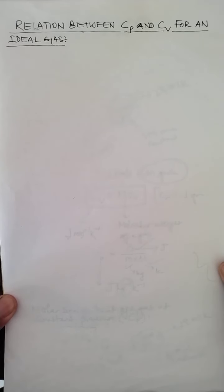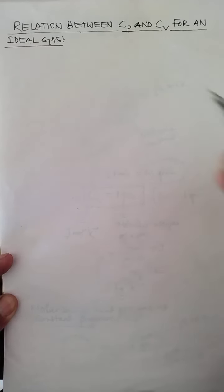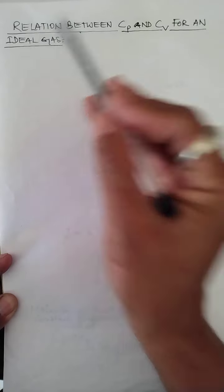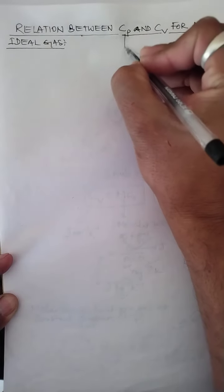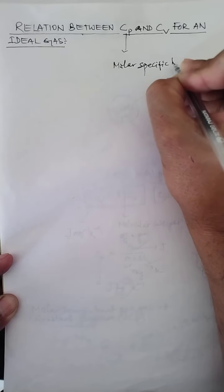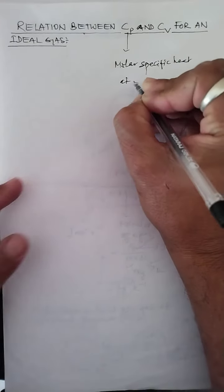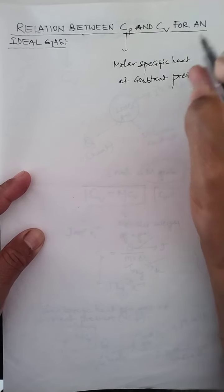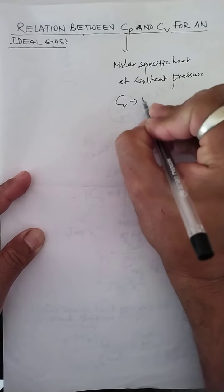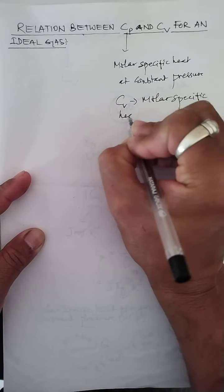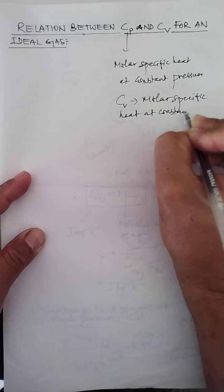Dear children of class 11 science, we will now derive a very important relation. The topic we are going to derive is the relation between Cp and Cv for an ideal gas. You know Cp is the molar specific heat at constant pressure, and Cv means molar specific heat at constant volume.